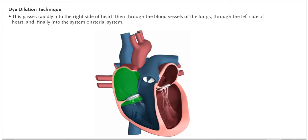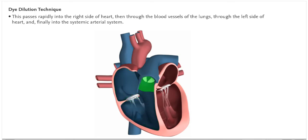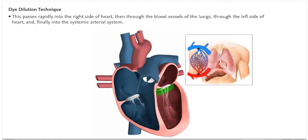This passes rapidly into the right side of the heart, through the blood vessels of the lungs, through the left side of the heart, and finally into the systemic arterial system.